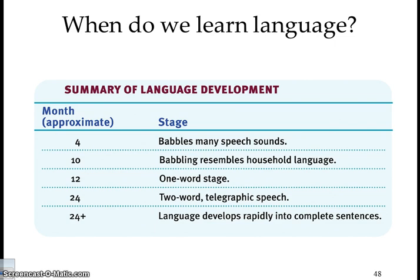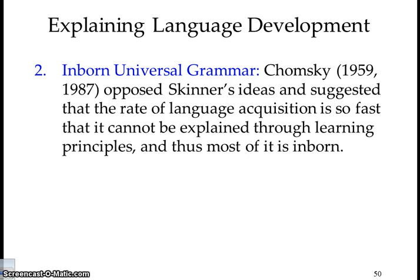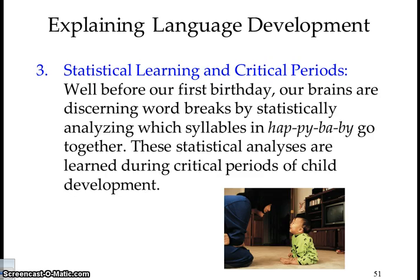Skinner believed language development can be explained through learning principles such as association, imitation, and reinforcement — kids copy us and we praise them when they speak. Chomsky disagreed, arguing that the rate of language acquisition is so fast it cannot be explained through learning principles alone — most language is inborn. He proposed a universal grammar that's within us. Another theory looks at statistical learning: well before our first birthdays, our brains are discerning words and breaking down syllables statistically.